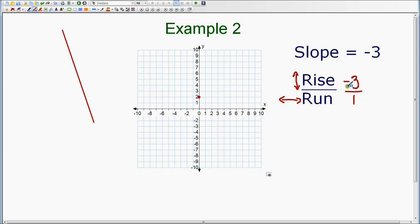Rise negative 3 means that we need to go down, because the 3 is negative. So from our point, 0, 2, we're going to go down 3.